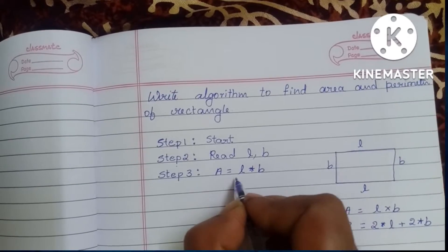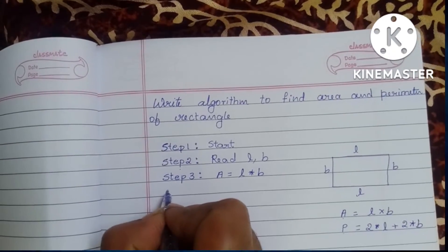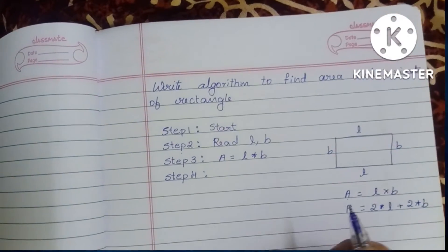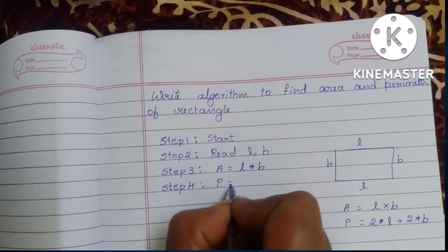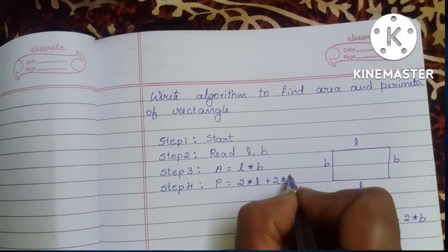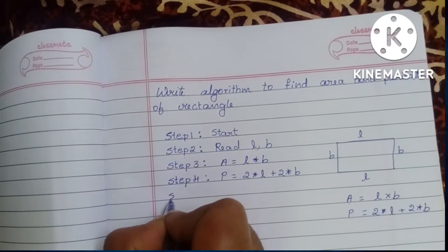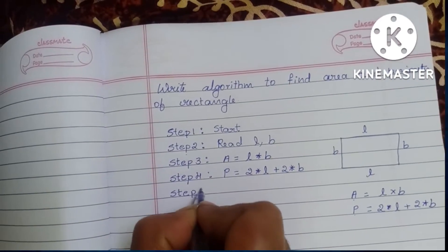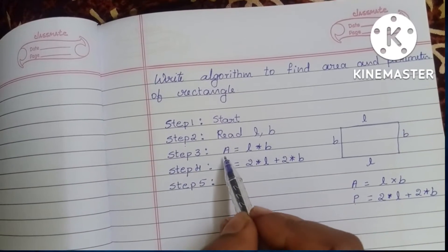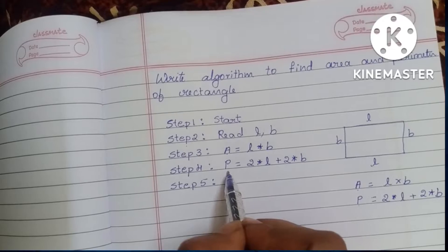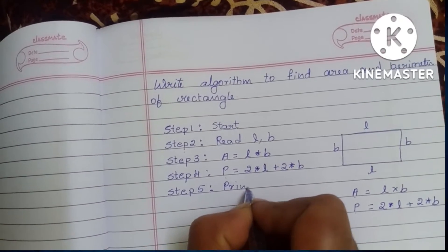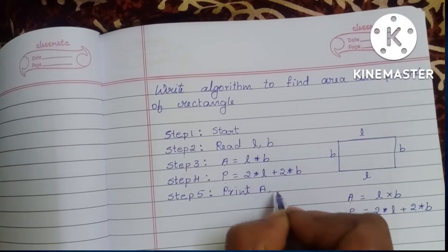In Step 4 we have to calculate the perimeter of the rectangle: P is equal to two times length plus two times breadth. In Step 5 we have to display the output, so write: Print A, B.